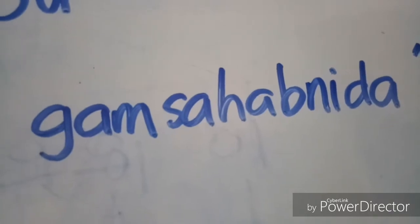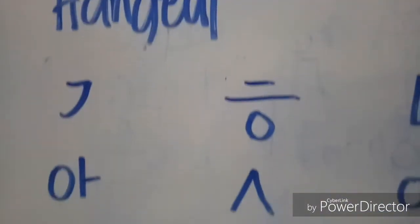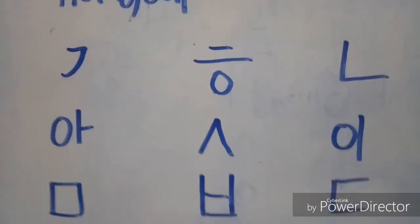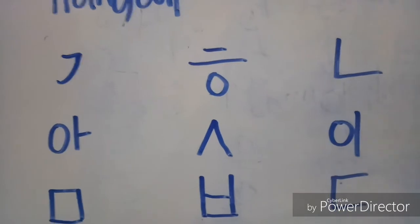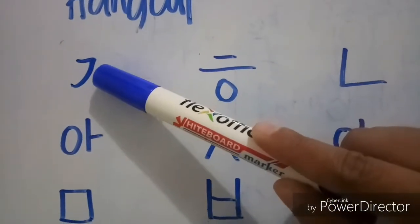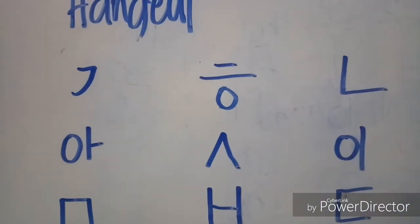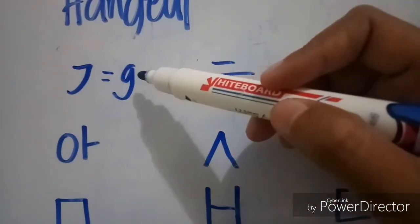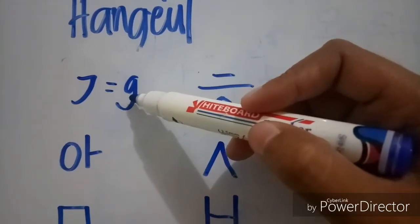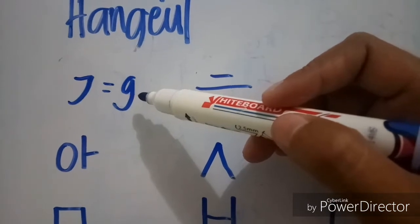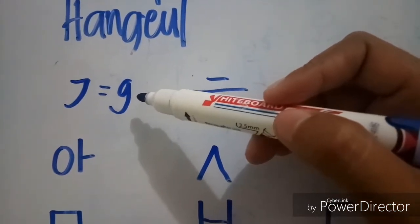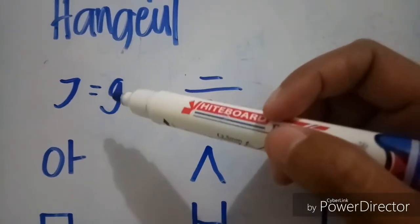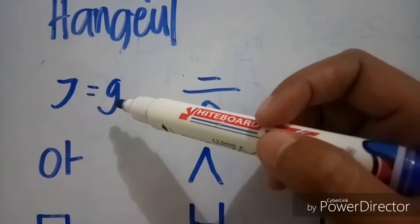For this 'kamsahamnida' word we are going to use these characters that I write down here. This one is 'K' in Roman characters — it sounds like K. You can check my previous video, I hope you can check them out.